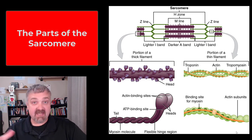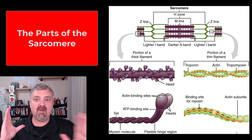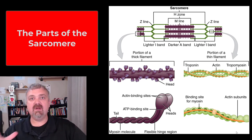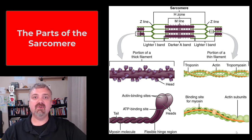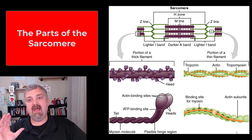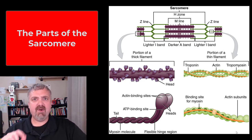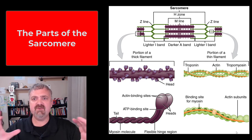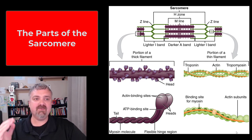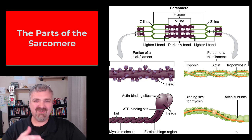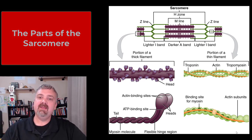Hey everybody, Dr. O here. There are going to be several videos where we talk about sarcomeres. Sarcomeres are the functional unit of a muscle — this is where contraction actually takes place. But in this video, I just want to talk about the parts of the sarcomere, because I know students get very confused when they look at this picture. So I just want to walk through the individual parts: what the Z line means, the H zone, that kind of thing.